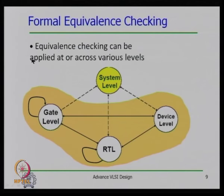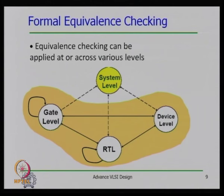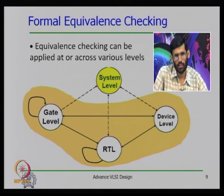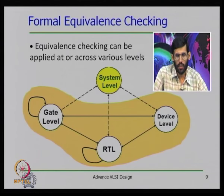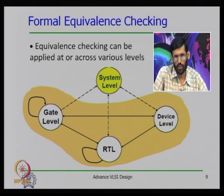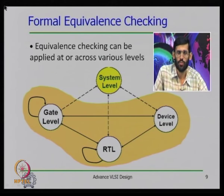One good thing about the equivalence checker is that it can be applied at one level of abstraction or across levels of abstraction — you can check gate-level netlist against RTL, RTL against RTL, gate-level netlist against gate-level netlist, or gate-level netlist against transistor implementation. At almost every stage of design transformation we use an equivalence checker.